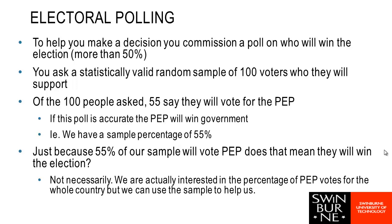We are going to do this by way of example. Imagine that we are interested in a political party called PEP. We have surveyed 100 people, and 55 out of 100 said they would vote for PEP. We are working on the basis that if you get more than 50% of the vote you win. So we have a sample percentage of 55%, and we want to determine whether this is sufficient evidence to conclude that PEP will actually win the election.